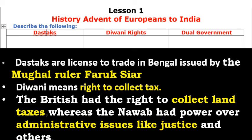What is dual government? Dual government means the British had the right to collect land taxes, whereas the Nawab had power for administrative issues like justice and others.